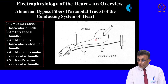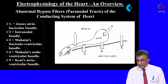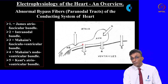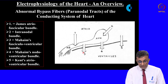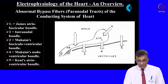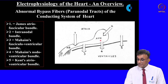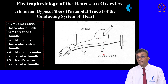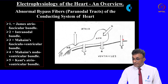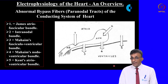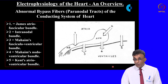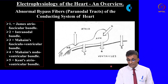At position one is James' atrio-fascicular bundle extending between the atrium and the bundle of His. At two is the intranodal bundle within the AV node. At three is Maheim's fasciclo-ventricular bundle between the bundle of His and the ventricle. At four is Maheim's nodo-ventricular bundle between the AV node and the ventricle. At five is Kent's atrio-ventricular bundle extending between the atrium and the ventricle. These paranodal tracts are sometimes responsible for certain abnormal rhythms picked up in the ECG.